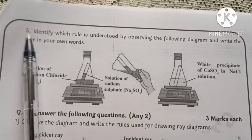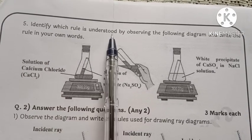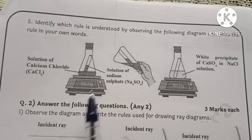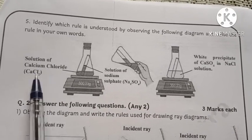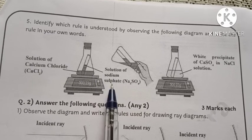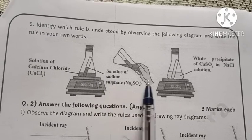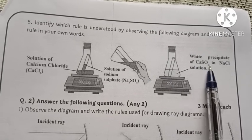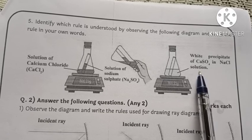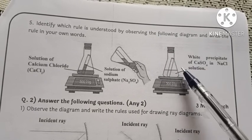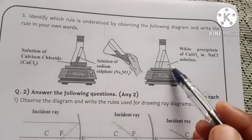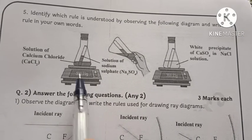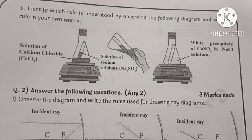Question number 5: identify which rule is understood by observing the following diagram and write the rule in your words. So here, solution of calcium chloride in test tube and solution of sodium sulfate. After mixing them, the white precipitate CaSO4 in NaCl solution. So reaction takes place. Here weight 300.23 grams and here also 300.23 grams.